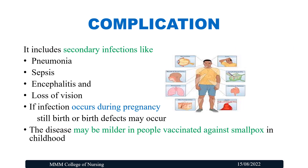Expected complications due to monkeypox include secondary infections such as pneumonia, sepsis, encephalitis, and loss of vision. If infection occurs during pregnancy, stillbirth or birth defects may occur. The disease may be milder in people who were vaccinated against smallpox in childhood.